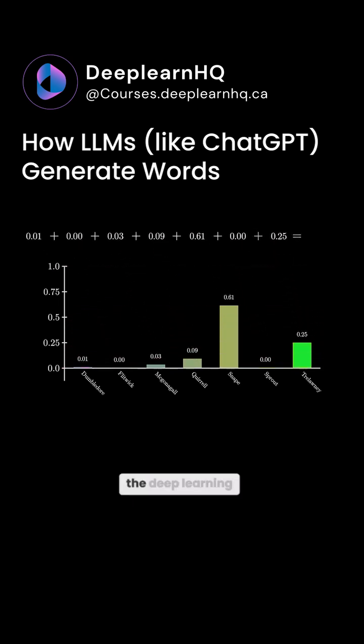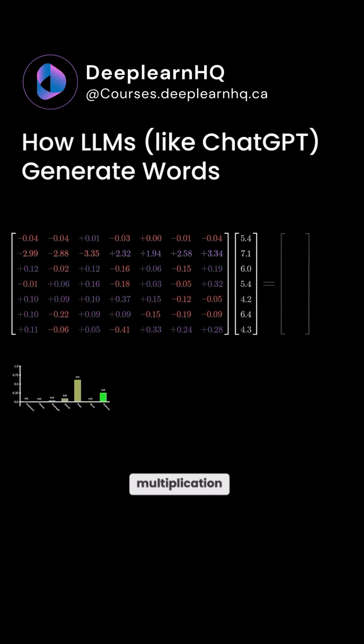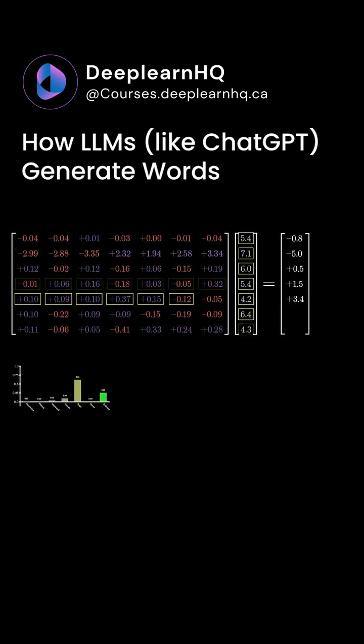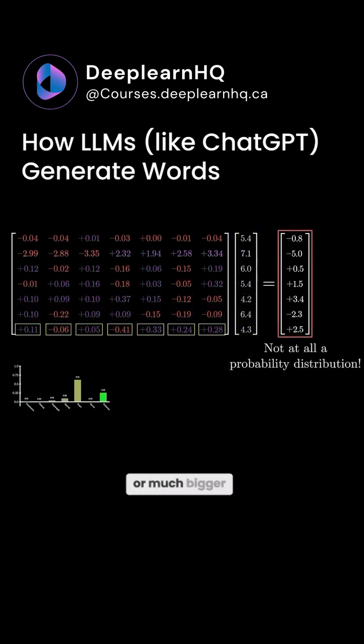However, if you're playing the deep learning game where everything you do looks like matrix vector multiplication, the outputs that you get by default don't abide by this at all. The values are often negative or much bigger than 1, and they almost certainly don't add up to 1.